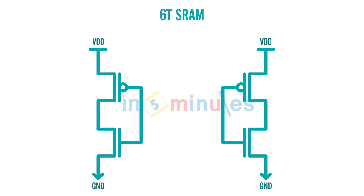Both these inverters need to be cross-coupled. When I say cross-coupled, it only means that the output of one inverter needs to be connected to the input of the other one. And the output of the other one needs to be connected to the input of the first. Let's name these inverters — let's call this inverter 1 and this inverter 2.